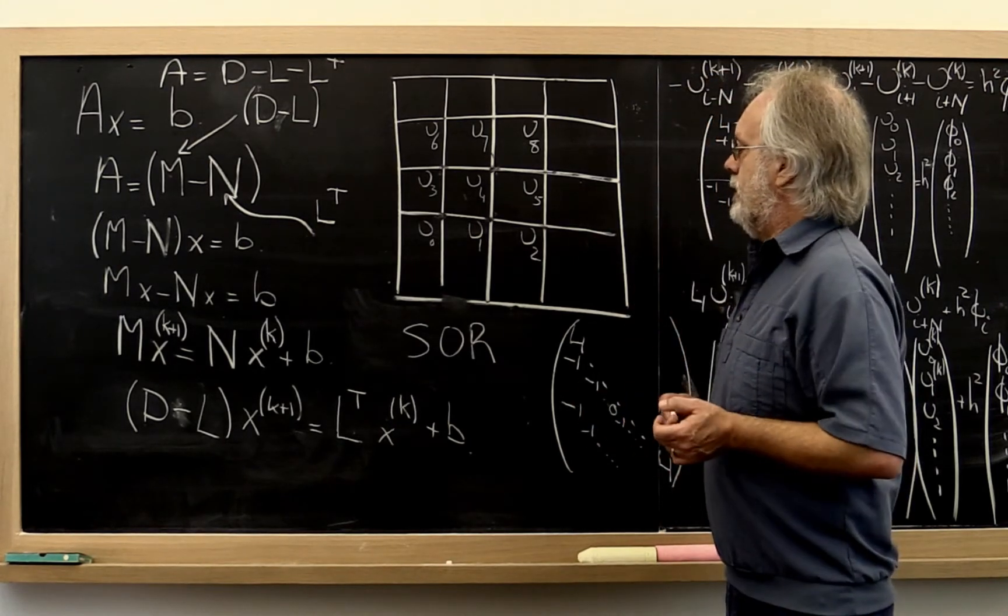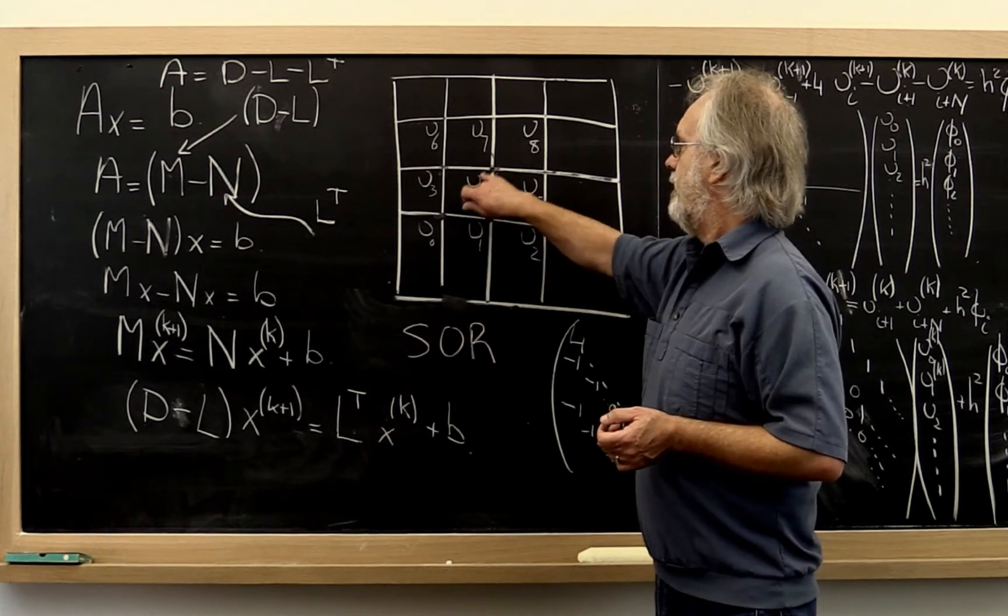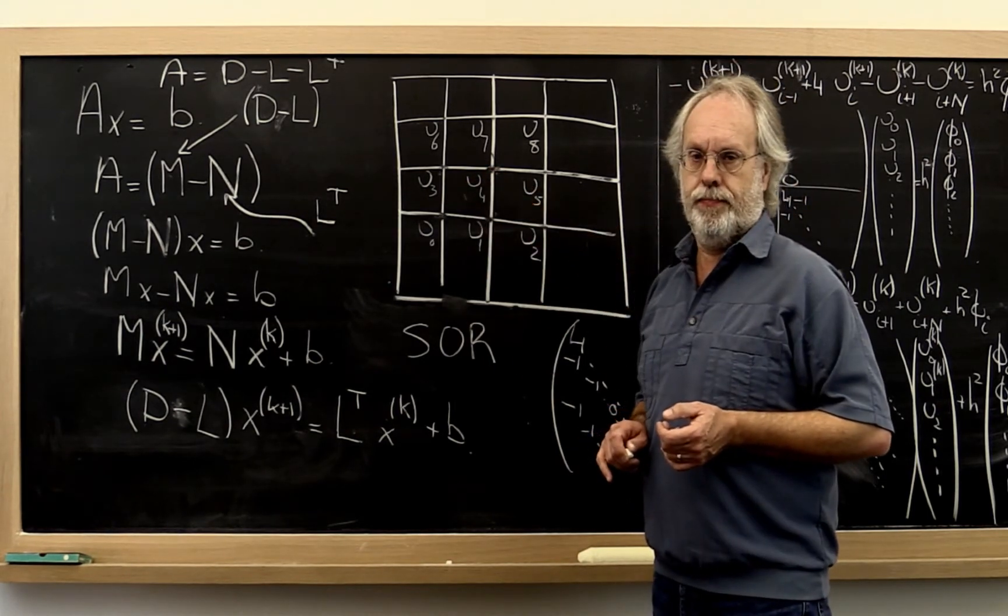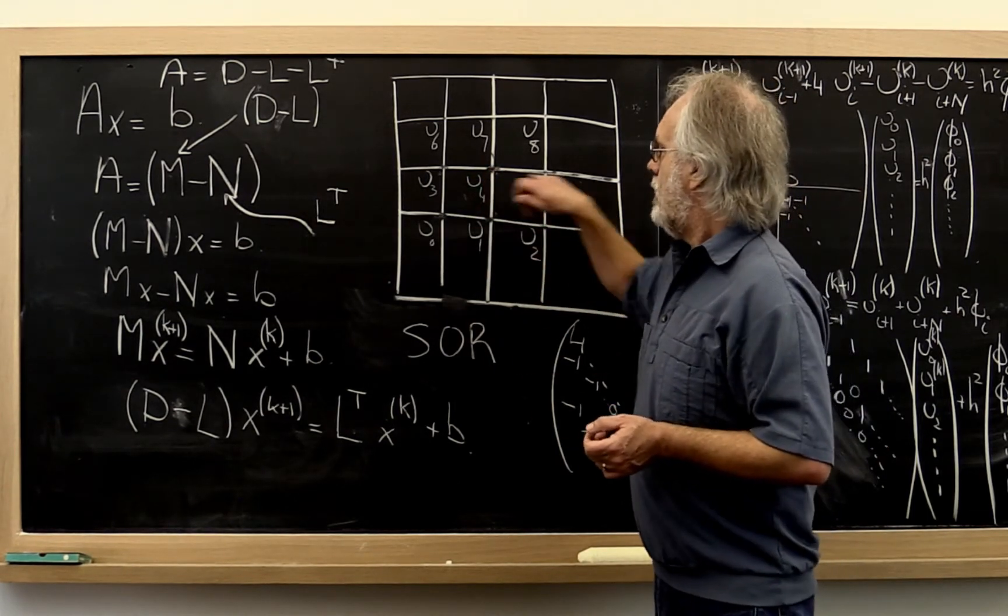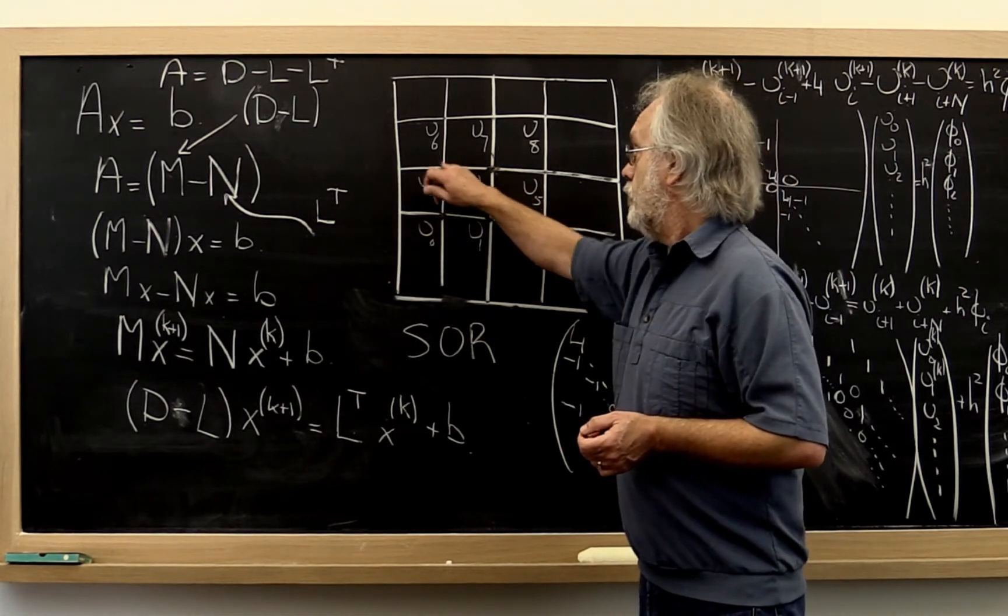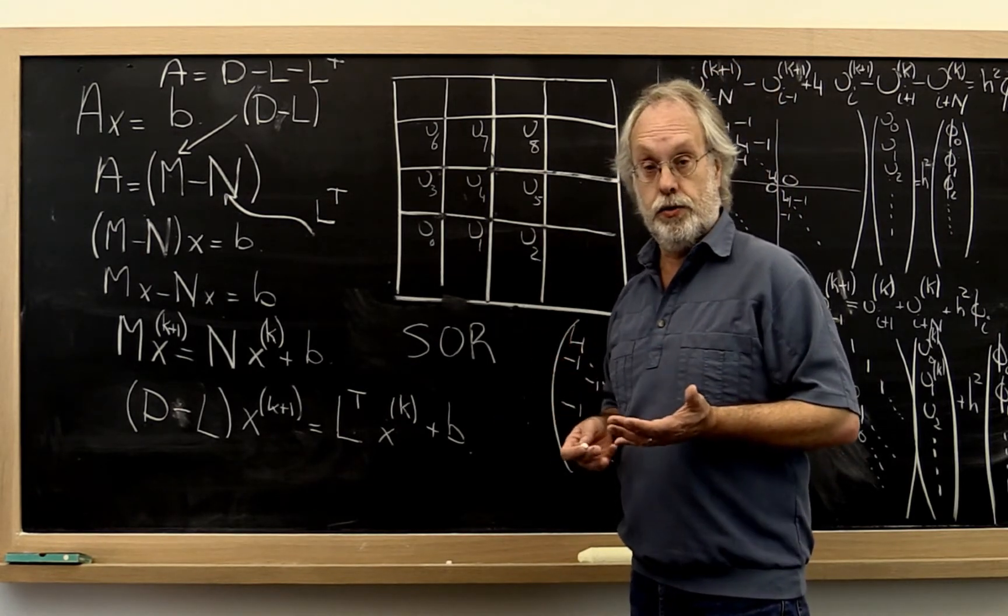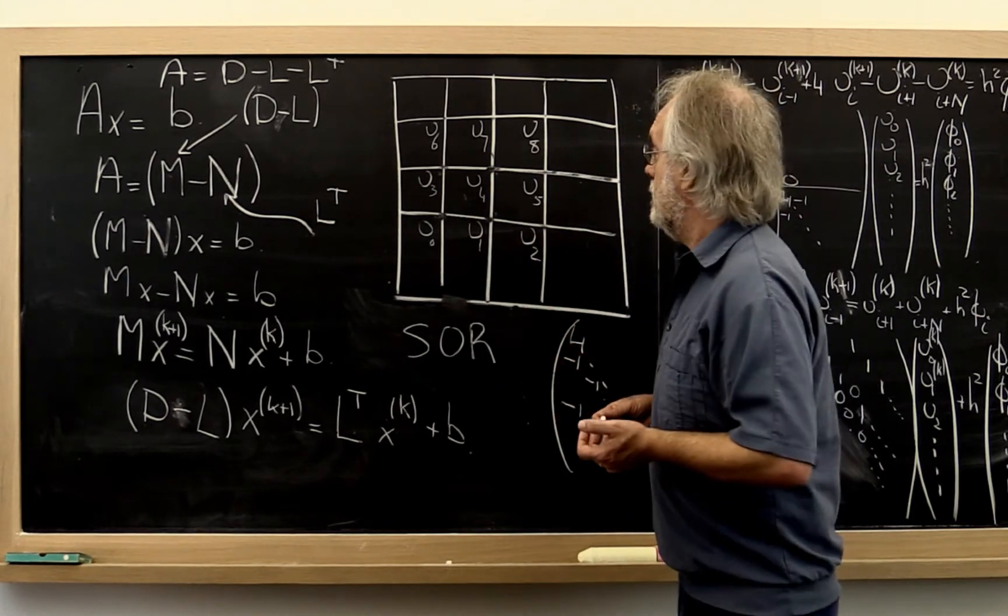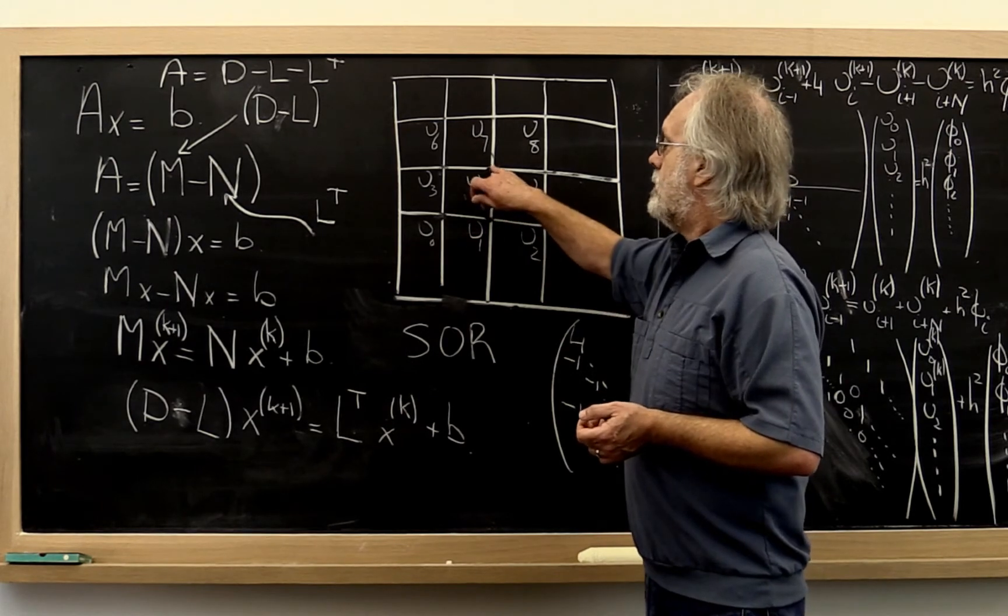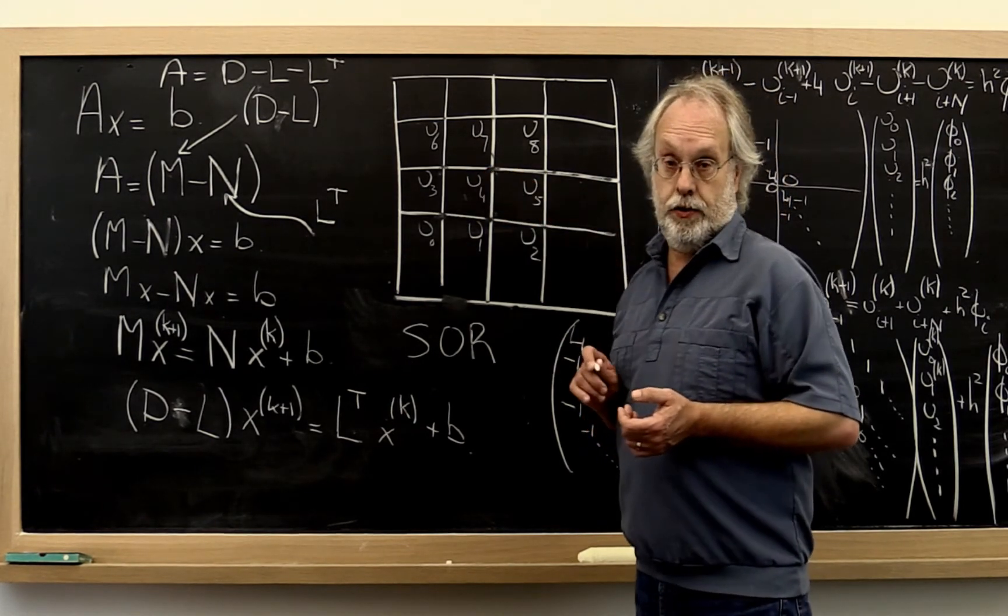So what's the general idea? Let's focus on some mesh point and the value being computed there. When we update that value, we use the most recently computed values the way Gauss-Seidel does, and we end up with the new value and the old value there.